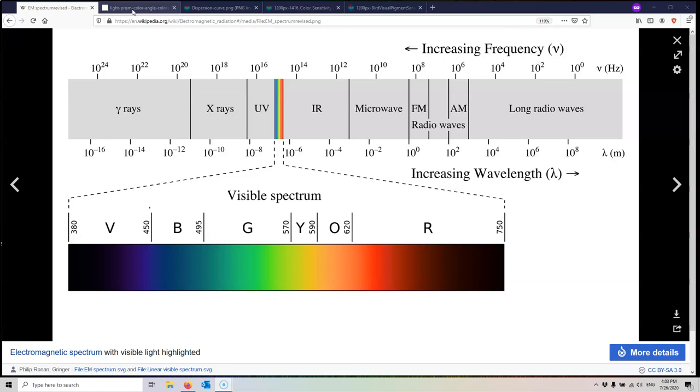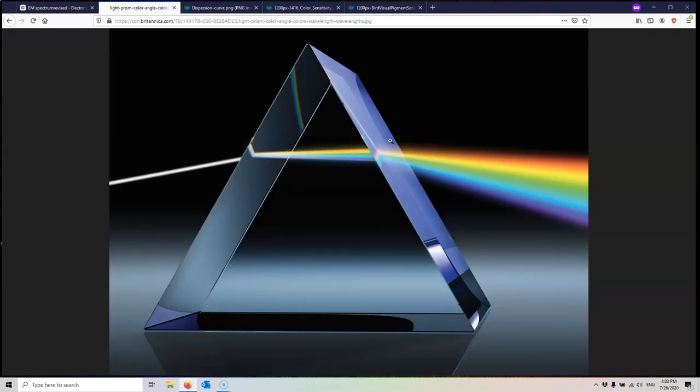And the way you do this is you use a prism. So I put a picture here, a beautiful picture. Again, much nicer than I could ever draw it. You send a white light ray in. And then it hits the surface at an angle and it refracts. We understand refraction. You can do the calculation if you know the index of refraction.